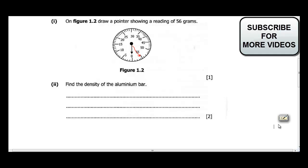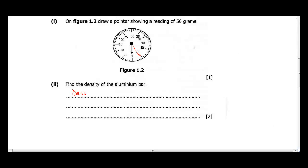Part D says find the density of the aluminum bar. Density is mass over volume. Our mass is 56 grams, and our volume is 20 cm cube.